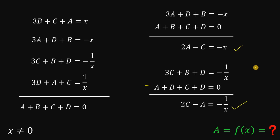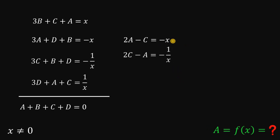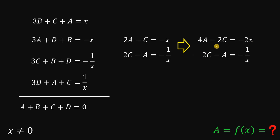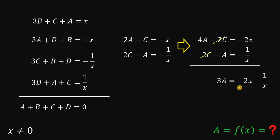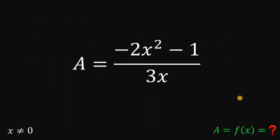Using these two results, we eliminate c to find a. Multiply the first result by 2: 4a minus 2c = negative 2x. Adding the second result, negative 2c and positive 2c cancel, giving 3a = negative 2x minus 1 over x. Simplifying the right-hand side: 3a = negative 2x squared minus 1, all over x. Dividing both sides by 3, we get a = negative 2x squared minus 1, all over 3x. This is our f of x.